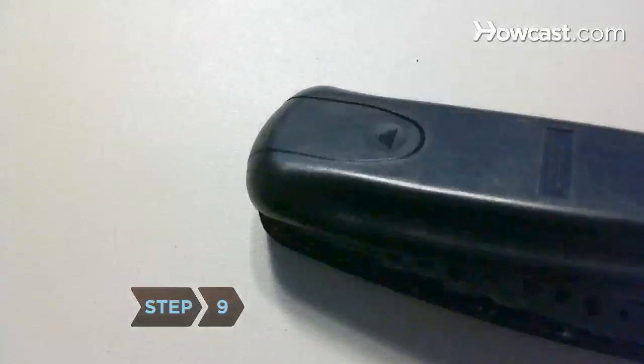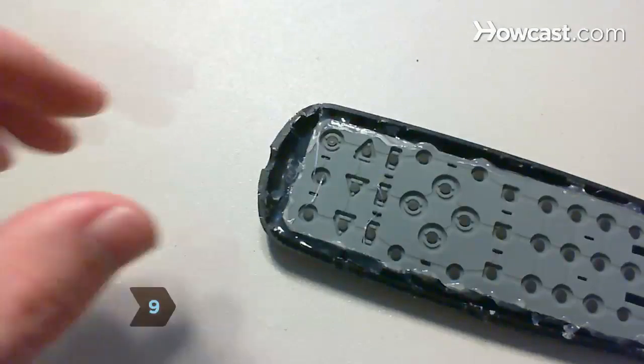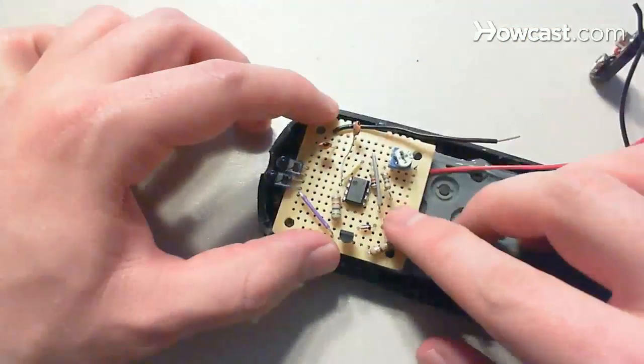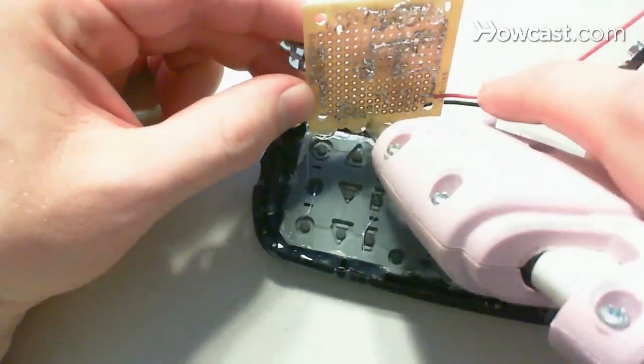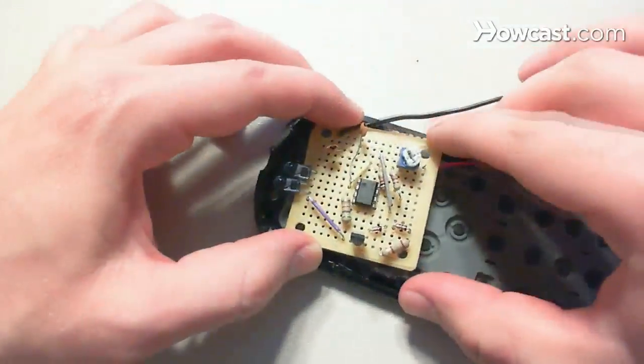Step 9: Open up a remote and make sure it's big enough to conceal your circuit. Remove the remote's LEDs and position the jammer's infrared LEDs in their place. Use tape and hot glue to hold the battery, circuit board, and LEDs in place.